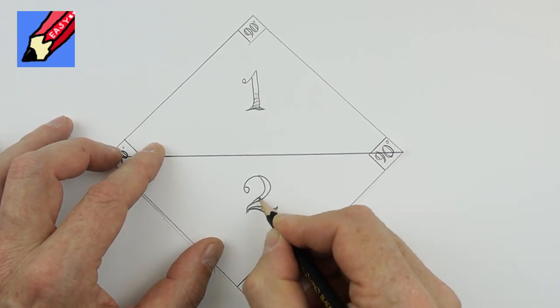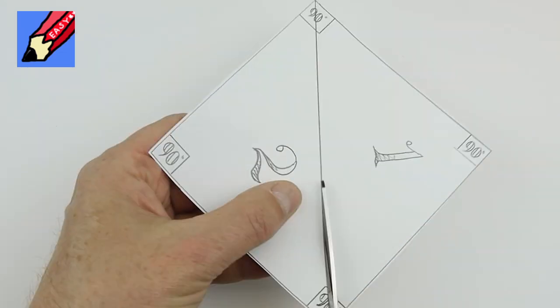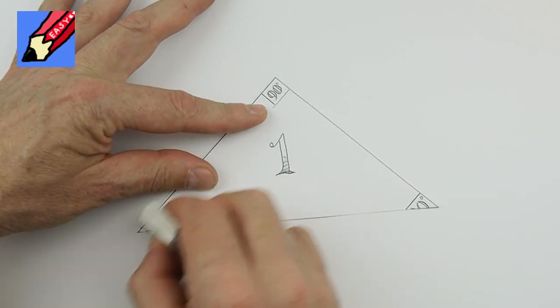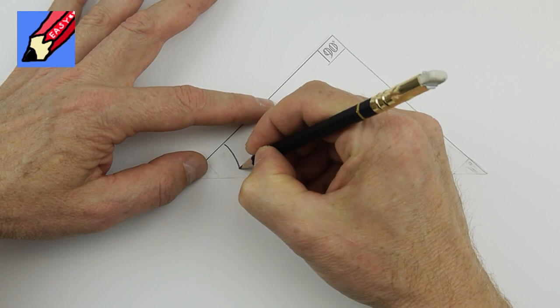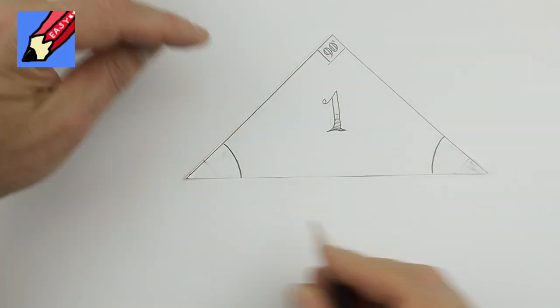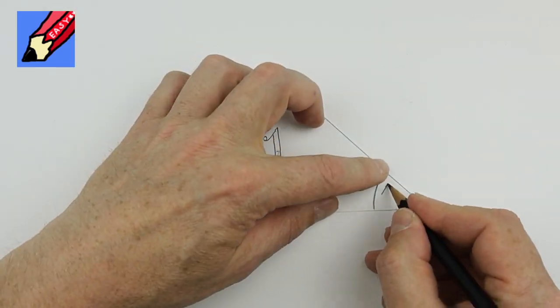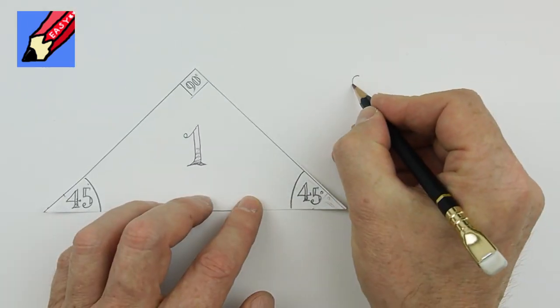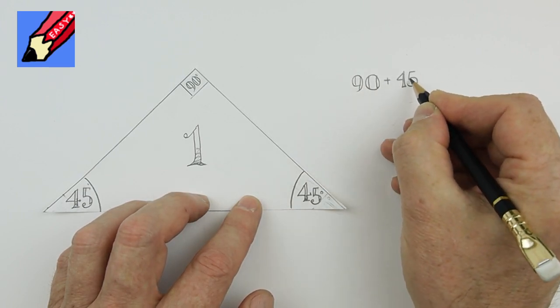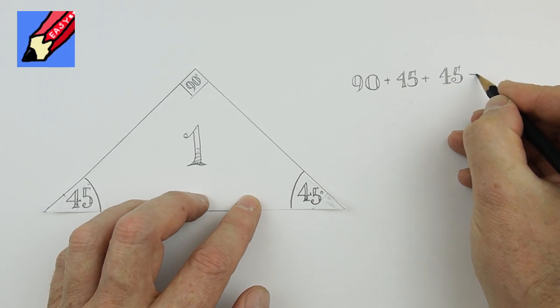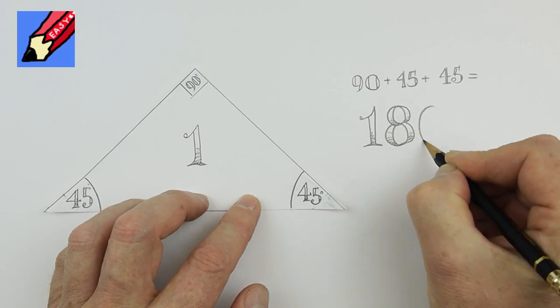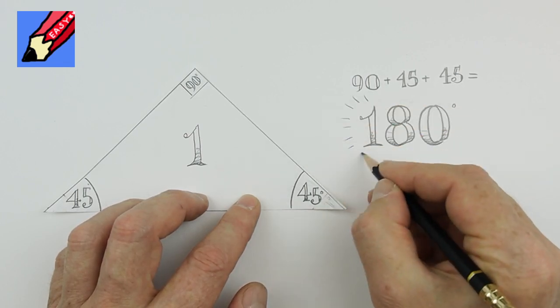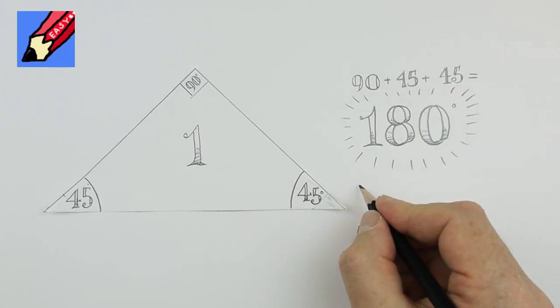Euclid smiled to himself. In each triangle, there is one right angle and two right angles that have been cut in half. A half of 90 degrees is 45. So 90 plus 45 plus 45 equals... 180, Euclid's friends cheered.